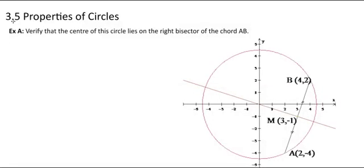Hello and welcome to Ms. Ma's grade 10 math class. This is 3.5, Properties of Circles. The first question asks us to verify that the center of the circle lies on the right bisector of the chord AB.